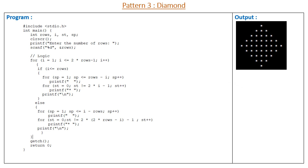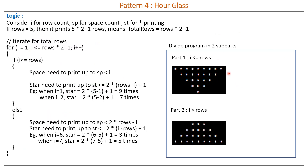Now we go for the hourglass pattern — a combination of an upper inverted triangle and a lower upright triangle. Here we also need three counters: I for row, SP for space, and ST for star printing. We also need to print rows up to total rows equal to rows multiplied by 2 minus 1, because the middle row is common to the upper and lower pattern. The program is divided into two parts: Part 1 where I is less than or equal to rows, and Part 2 where I is greater than rows.